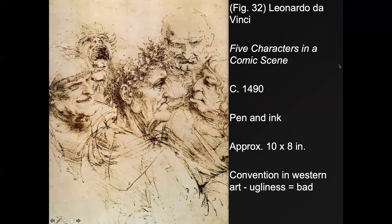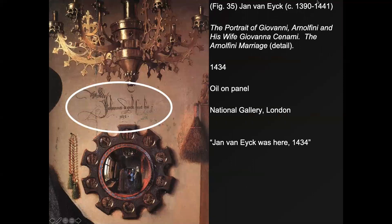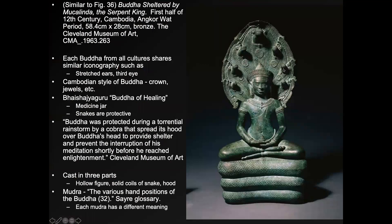Some conventions in Western art: Leonardo da Vinci's 'Five Characters in a Comic Scene' deliberately makes everyone look less than ideal — floppy skin, unusual noses, giant chins, beady eyes. The convention in Western art through the Renaissance is that ugliness equals bad. But many cultures aren't like that — sometimes things that look ugly are considered good, even in music. Heavy metal fans know that sometimes ugly is really good. So iconography is our next topic.